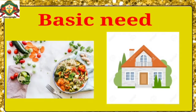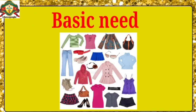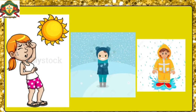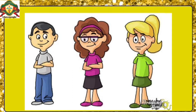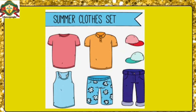Like food and shelter, clothing is also our basic need. We wear clothes to cover our body and protect ourselves from dust, heat, rain, cold, etc. Clothes also enhance our personality. In summer, we wear light cotton clothes because they keep us cool.